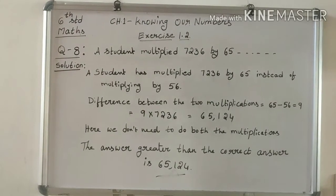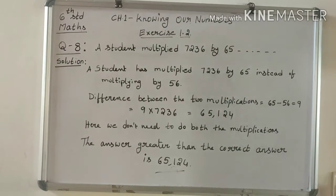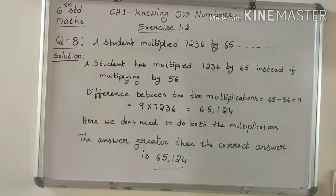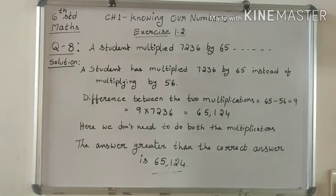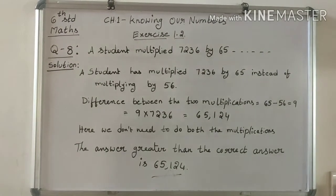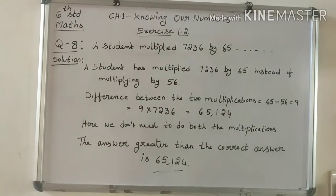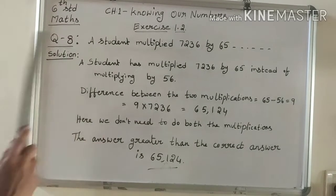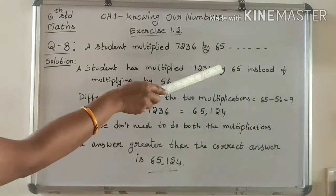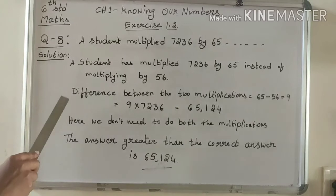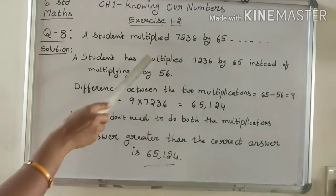A student multiplied 7,236 by 65 instead of multiplying by 56. By how much was his answer greater than the correct answer? Hint: Do you need to do both the multiplications? Here a student multiplied 7,236 by 65 instead of 56. We need to find the difference between the two multiplications.